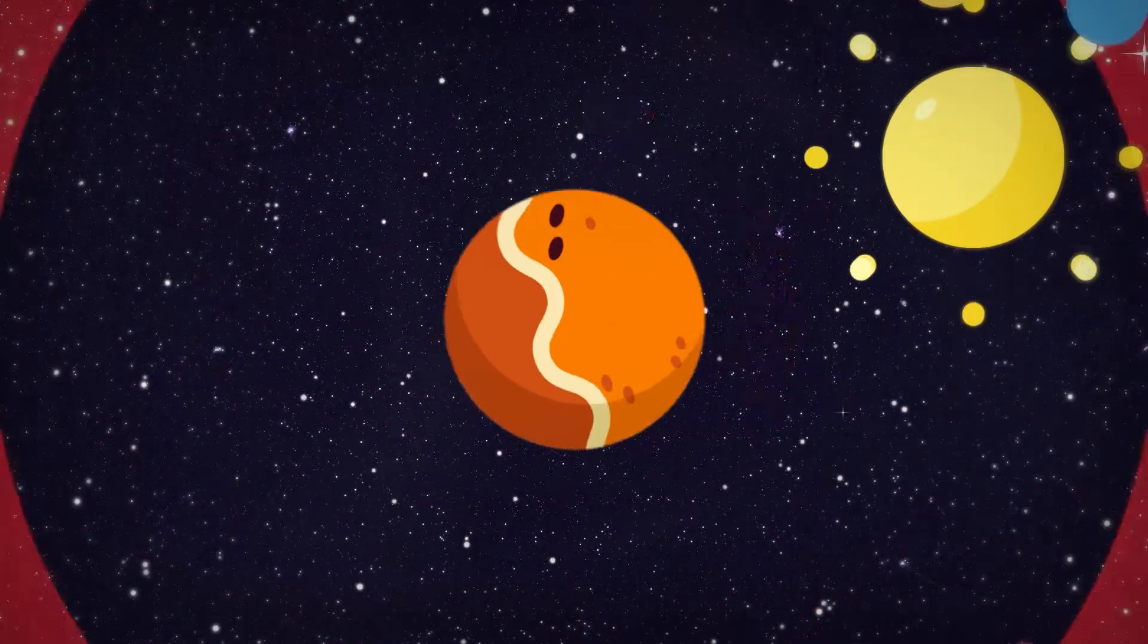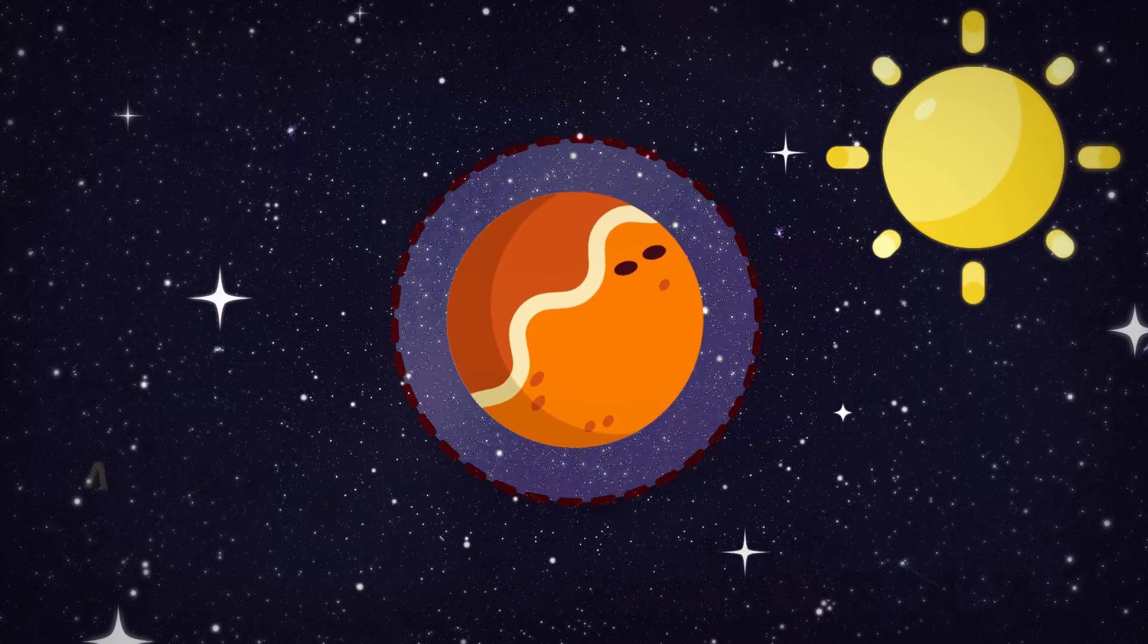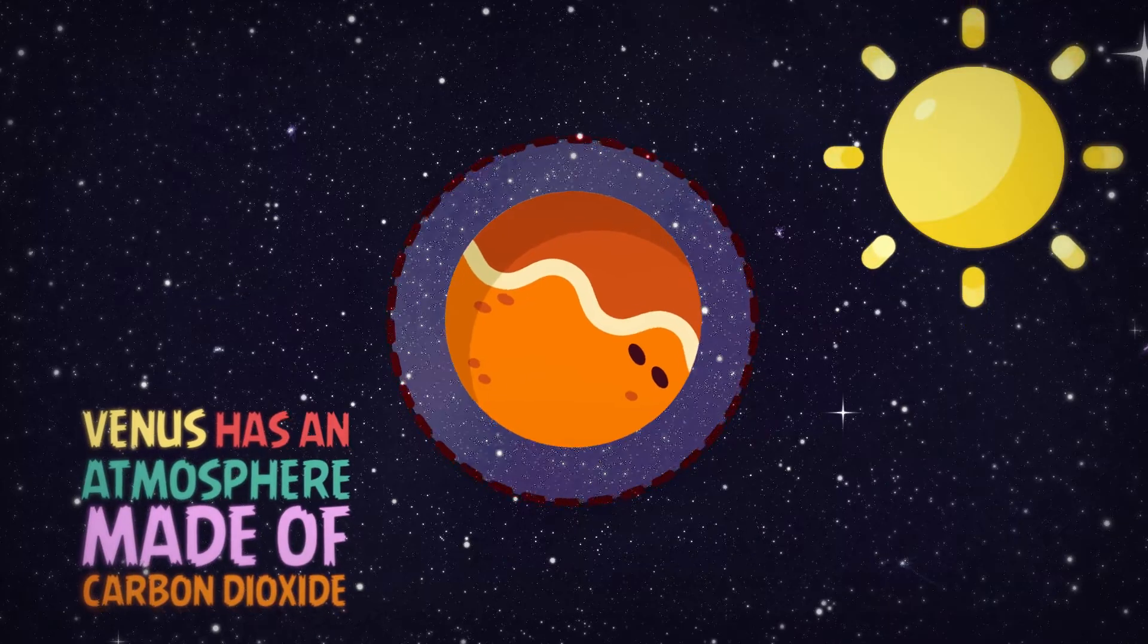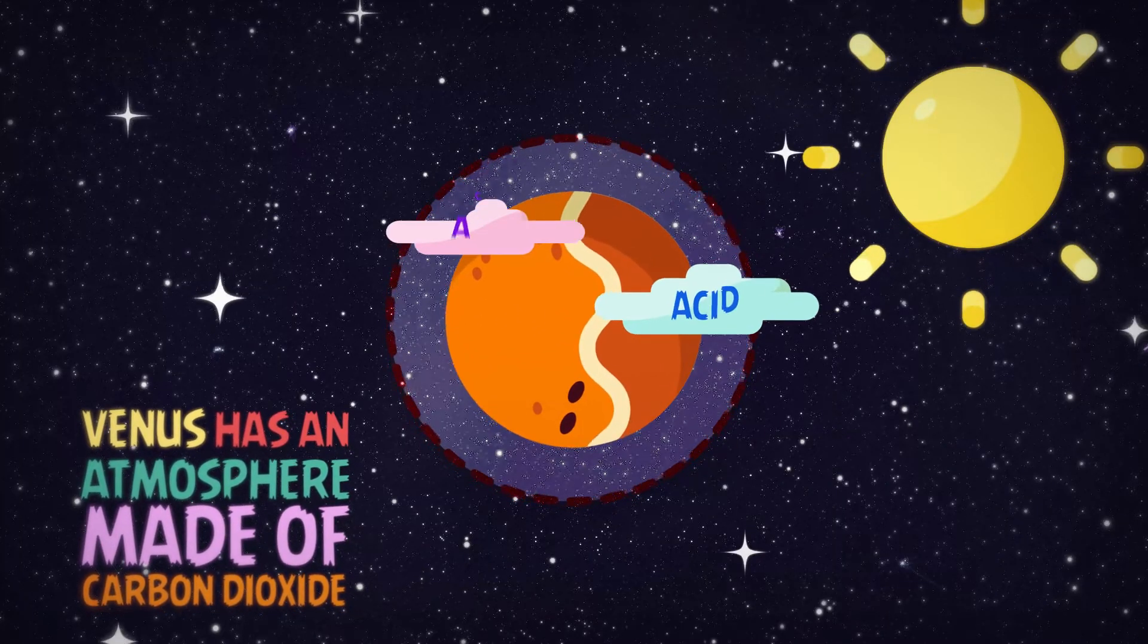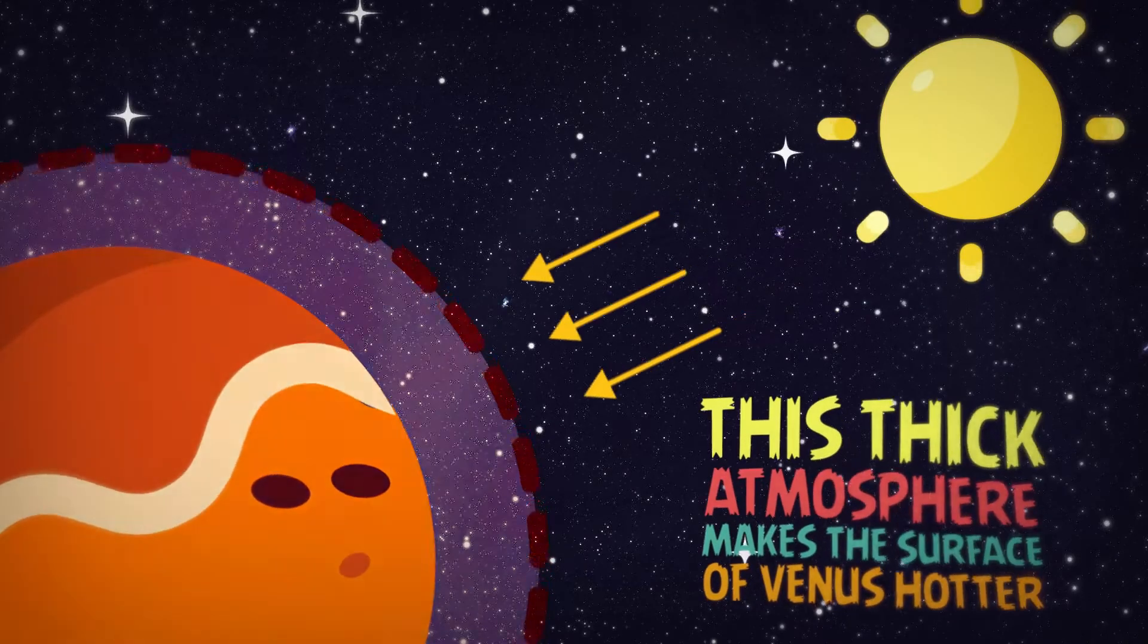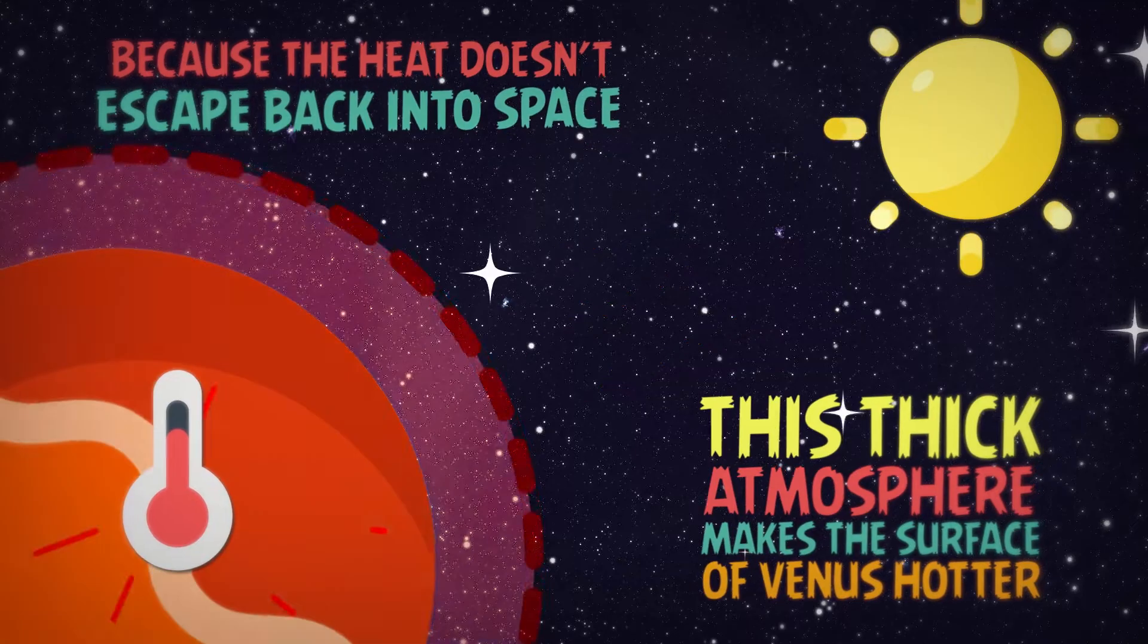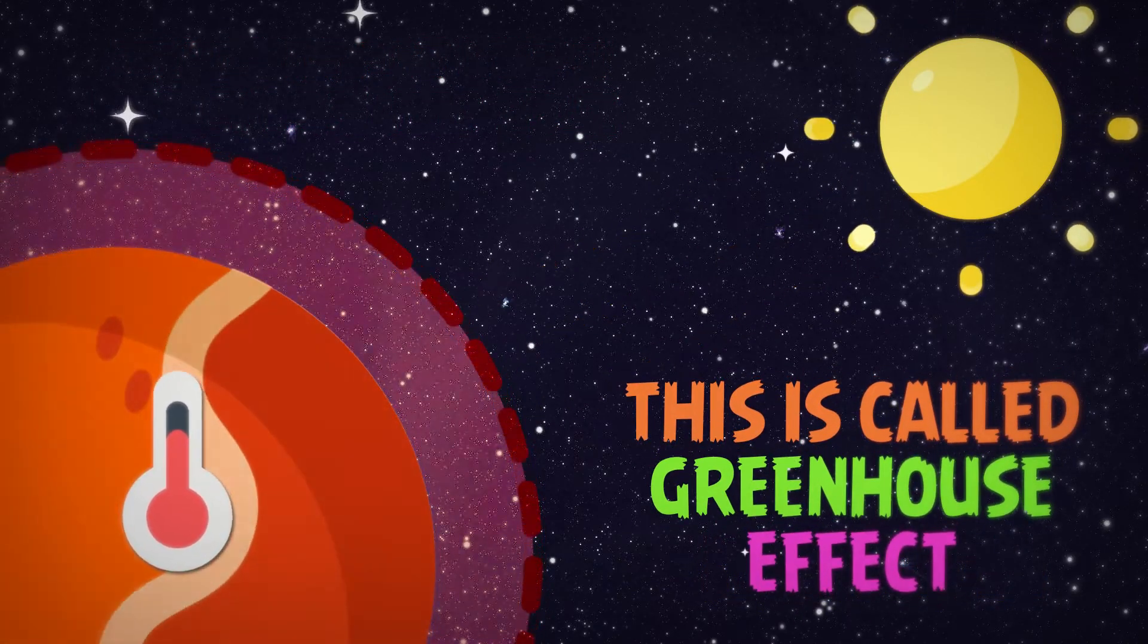The reason that Venus is hotter than Mercury is because it has an atmosphere made of carbon dioxide. It also has clouds of acid inside the atmosphere. This thick atmosphere makes the surface of Venus hotter because the heat doesn't escape back into space. This is called the greenhouse effect.